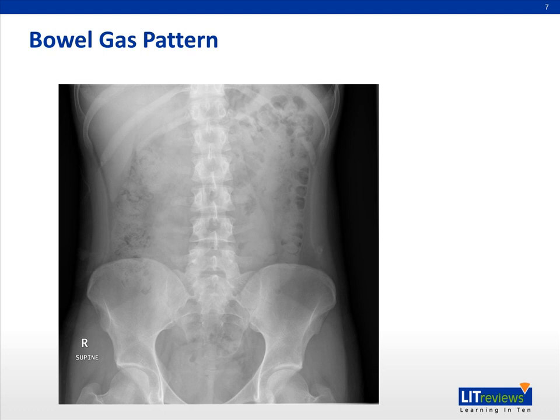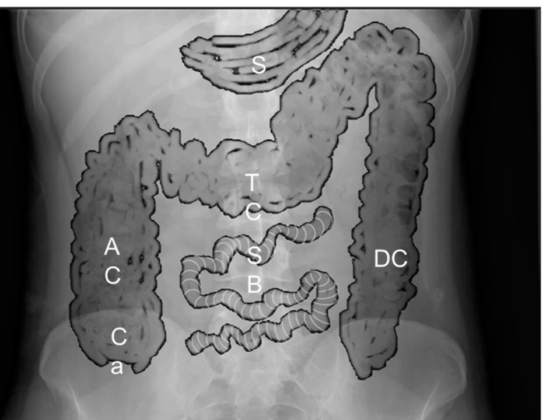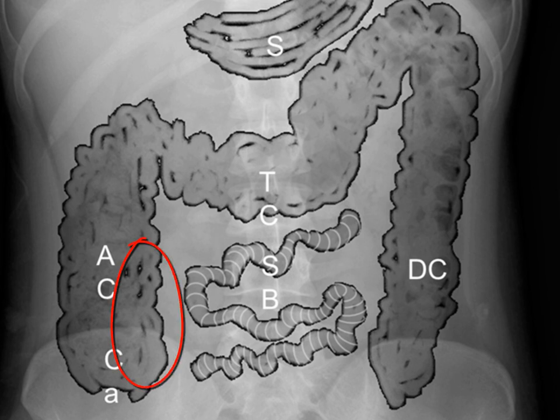For bowel gas patterns, small bowel will be in the central abdomen. They have these thin mucosal folds called plicae circulares, and they are quite tightly spaced together and span across the entire width of the bowel. In the periphery, we will have the large bowel, and they have these haustrations which do not span across the entire width of the bowel, and so can help you distinguish between large and small bowel.